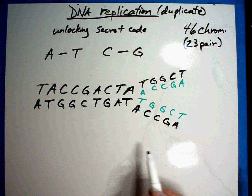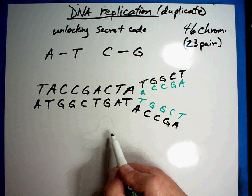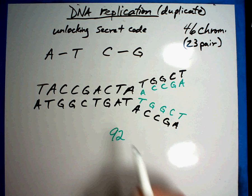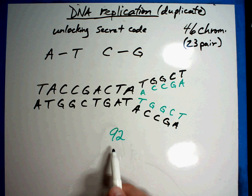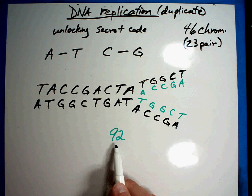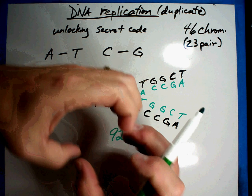And so what ends up happening is you have a cell that no longer has 46 chromosomes. It has 92 chromosomes. Well, a cell cannot have, a human cell cannot have 92 chromosomes in it.